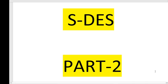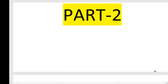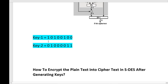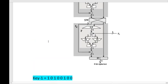In this video I am going to explain how to encrypt data using the SDS algorithm. SDS algorithm is a two-round encryption technique, so in each round we use different key values. We require two keys to perform this encryption. The two key values are: Key 1 is 10100100 and Key 2 is 01000010.